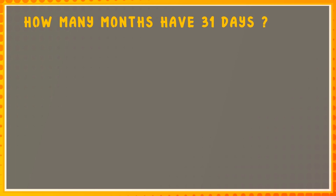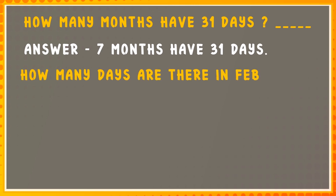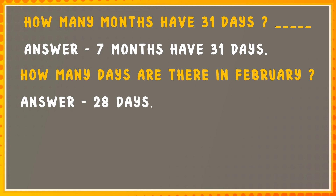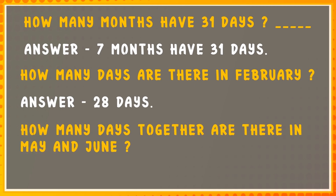How many months have 31 days? Seven months have 31 days. How many days are there in February? 28. How many days together are there in May and June? 61 days.